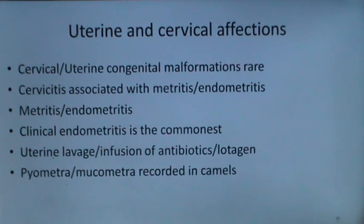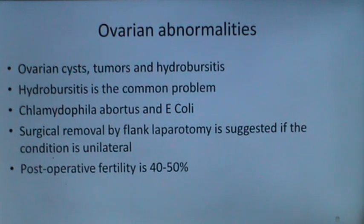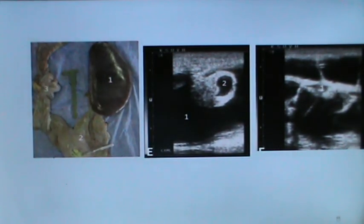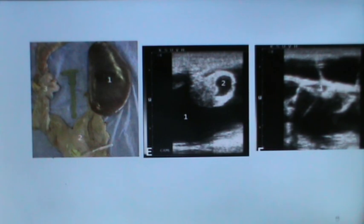Pyometra and mucometra have been recorded in camels. Hydrosalpinx is the most common ovarian problem in breeding camels and is thought to be caused by Chlamydophila and E. coli. Surgical removal by flank laparotomy is suggested if the condition is unilateral, with post-operative fertility reported at 40 to 50%. Hydrosalpinx frequently creates confusion among novice examiners, who find plenty of fluid and mistake it for a pregnancy — here you can see the ovary surrounded by plenty of fluid.